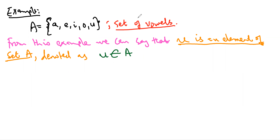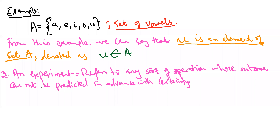The second concept to define is an experiment — an operation whose outcome cannot be predicted in advance with certainty. For instance, when you toss a coin three times, you can predict the possible outcomes, but you can never be sure of exactly what will happen until you perform the experiment.